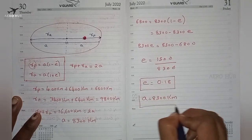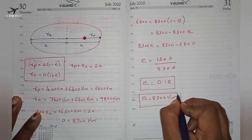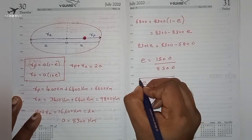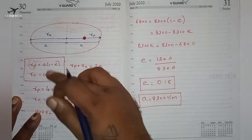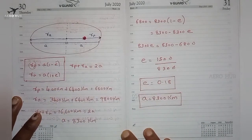We have solved one important problem here, and these two relations — rp = a(1 - e) and ra = a(1 + e) — are really important. Thank you for listening. Take care.